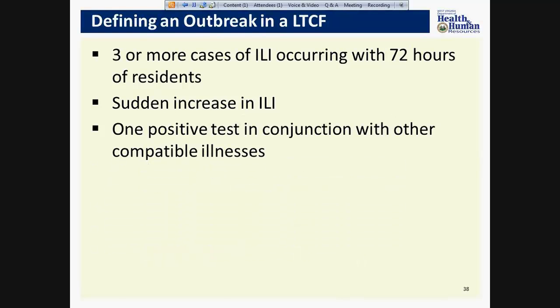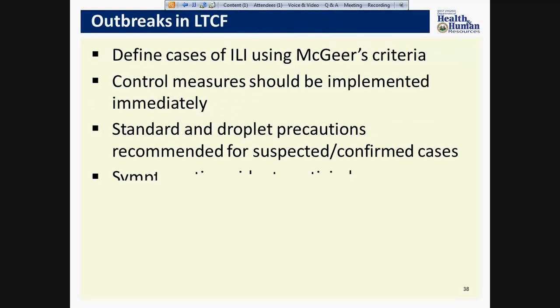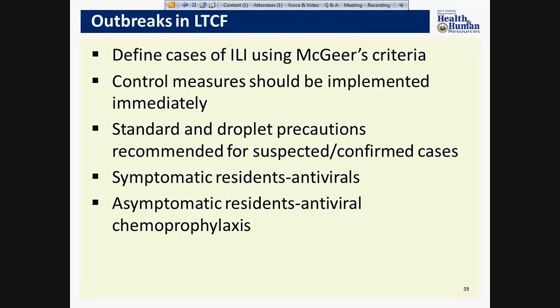Outbreaks in long-term care facilities are defined as three or more cases of influenza-like illness occurring within 72 hours or more of residence. It can also be a sudden increase in influenza-like illness or a single positive influenza test in conjunction with other compatible illnesses. Outbreaks in long-term care facilities are of significant public health interest because of the increase in morbidity and mortality associated with influenza in the elderly. Using the McGeer's criteria can be very helpful in determining whether you're dealing with an influenza, lower respiratory, or pneumonia outbreak.